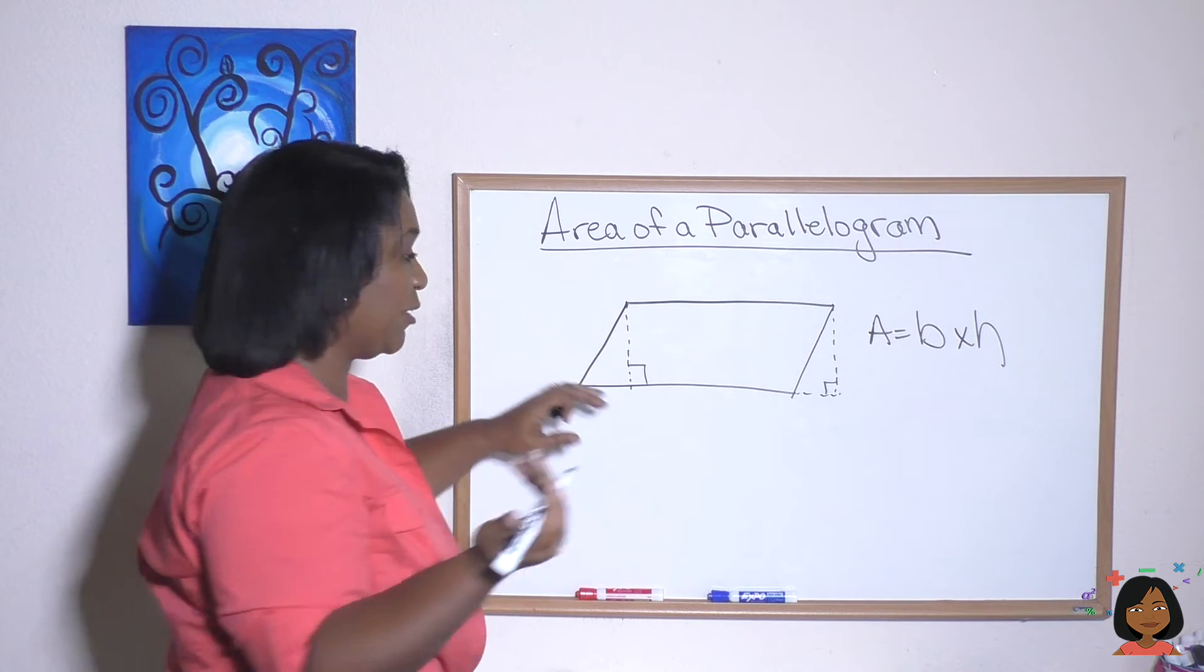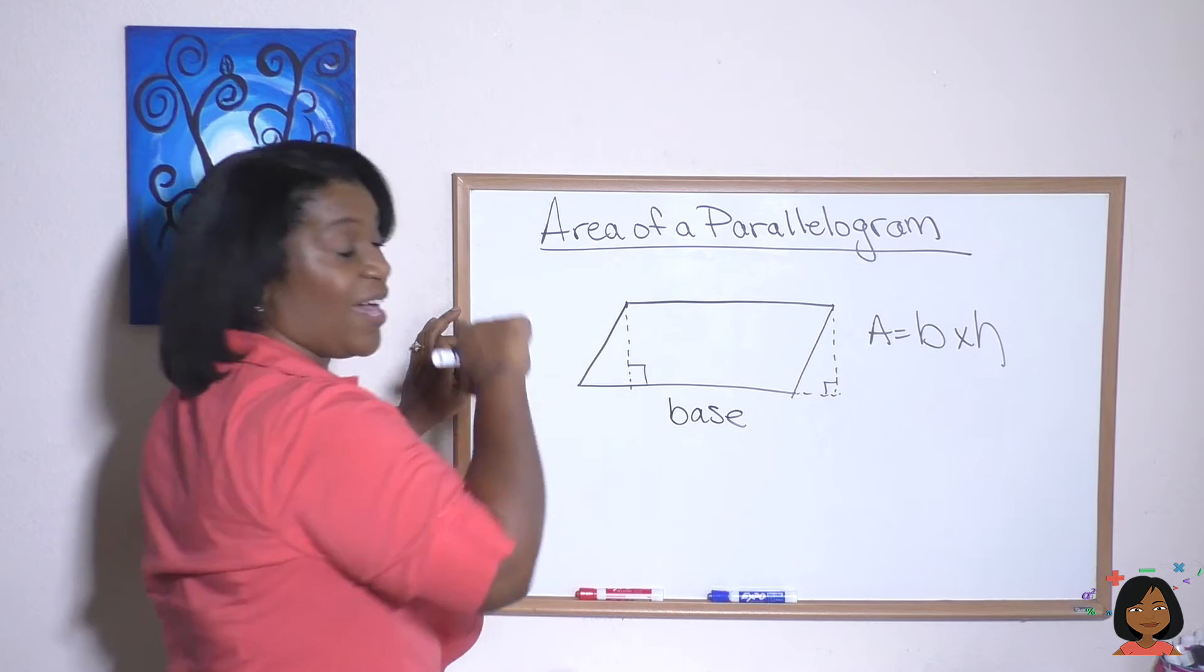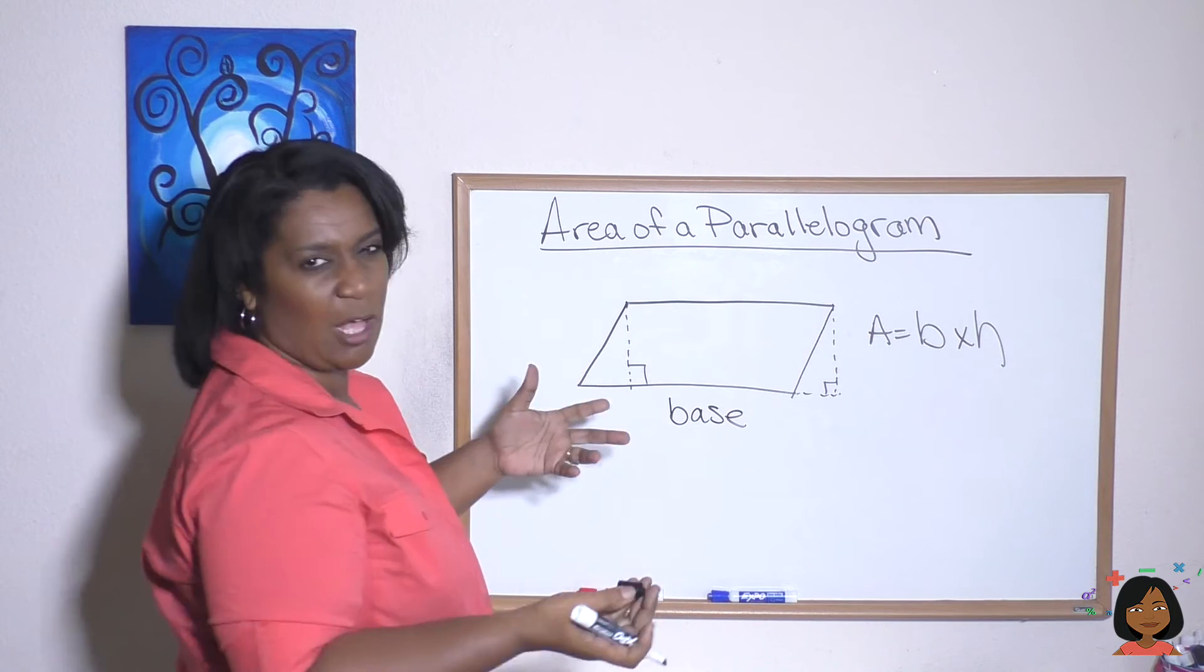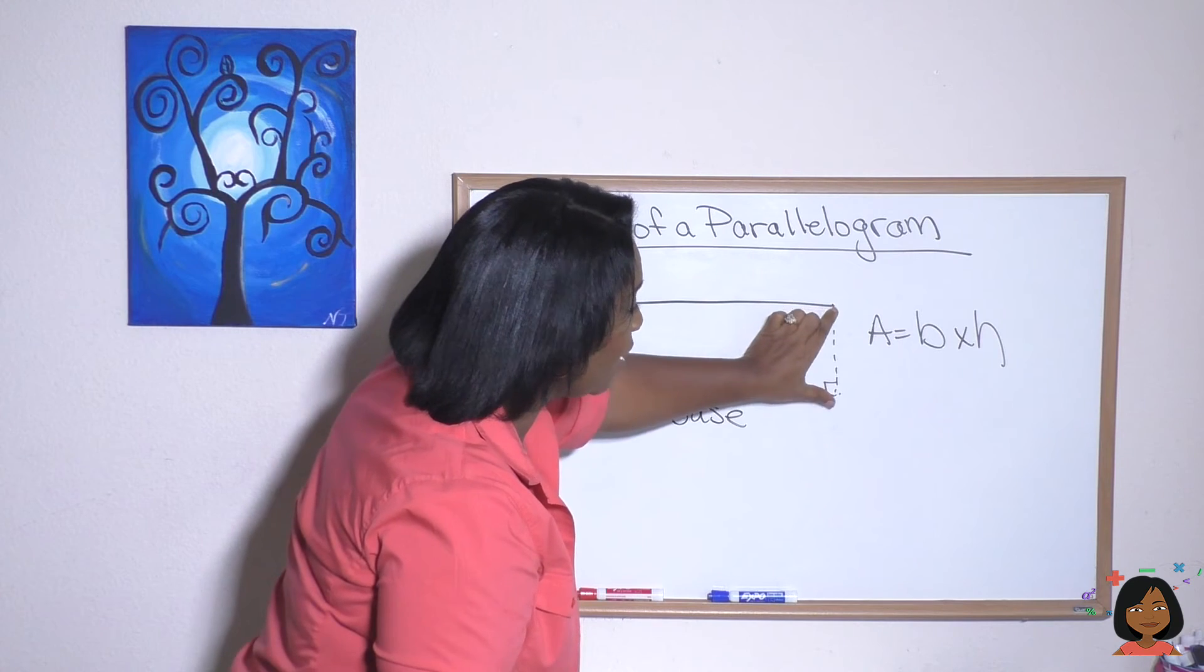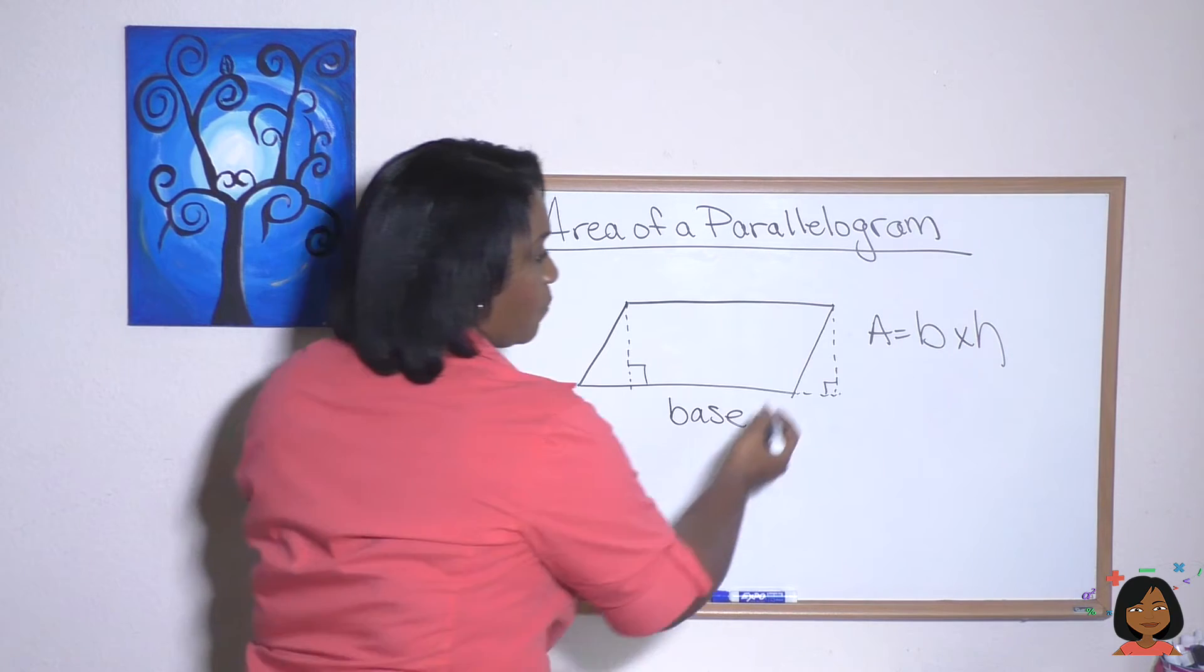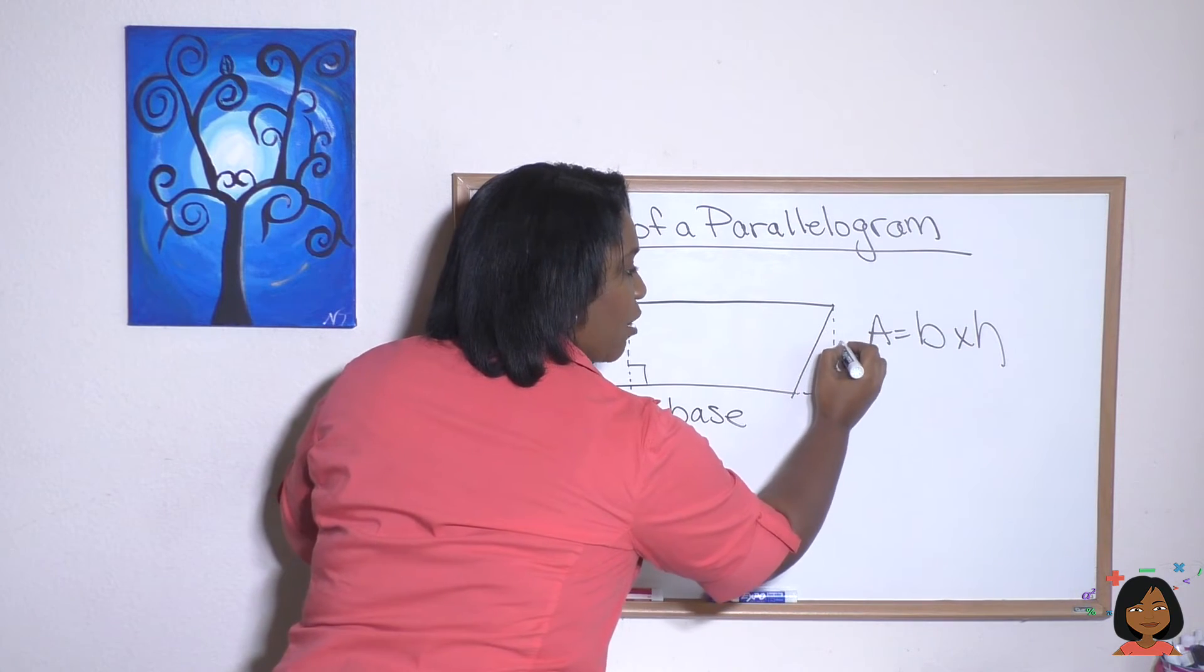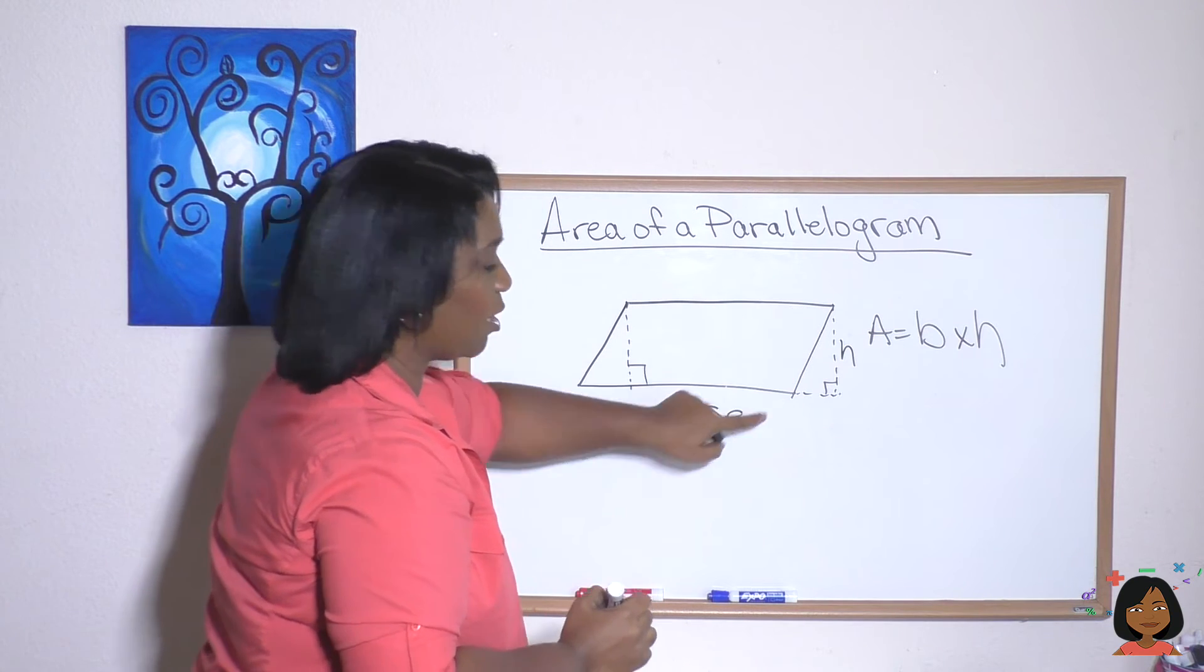But the height, normally we call that the width - usually depends on what's longer - but the height has to do with the distance when you drop that 90 degrees. So this right here is called the height.